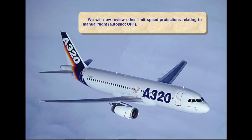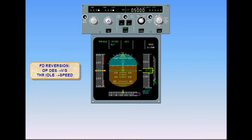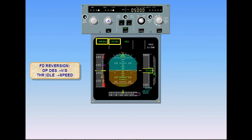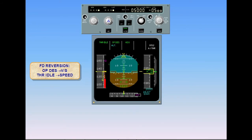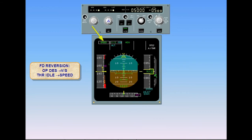We will now review other limit speed protections relating to manual flight with the autopilot off. You are manually flying the aircraft in a descent using the flight director and the autothrust. The current modes are open descent and thrust idle. We now pitch the aircraft up, disregarding the flight director orders, and the speed decreases. When the speed reaches VLS minus 2 knots, or VLS minus 17 knots with speed brakes extended, the autothrust reverts from thrust idle to speed, and thrust is readjusted to capture the target speed, or VLS, whichever is higher. Simultaneously, open descent reverts to vertical speed using the actual vertical speed at the time of reversion.